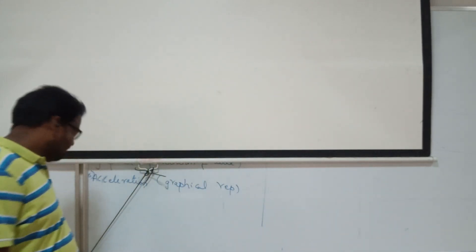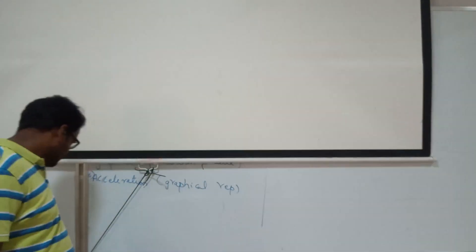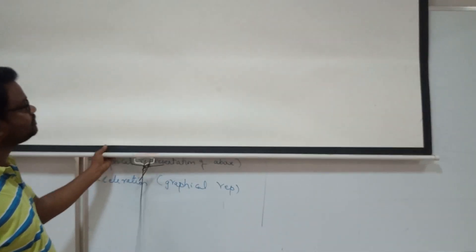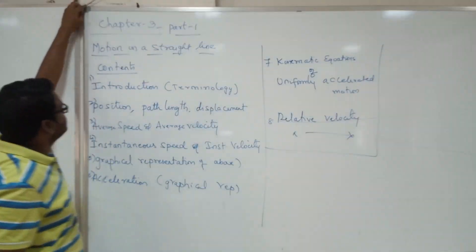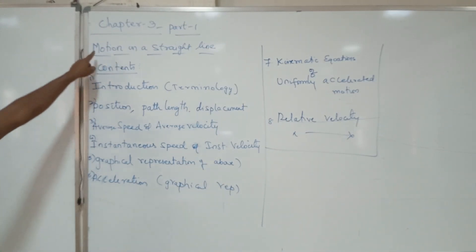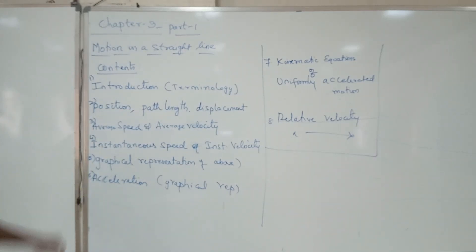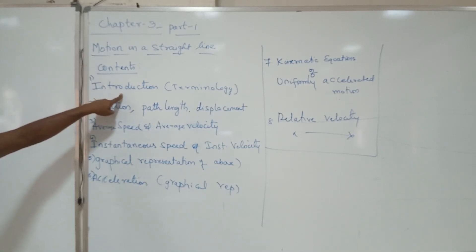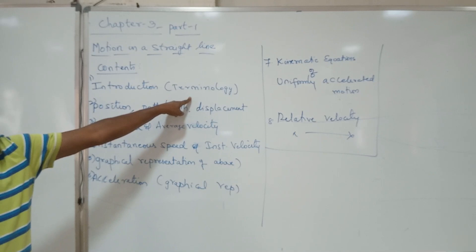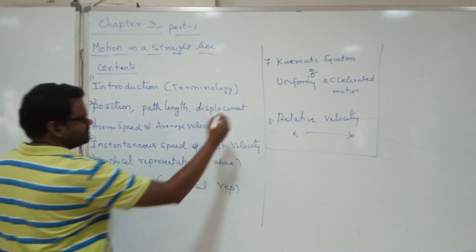First of all, I would like to go over the contents of this chapter. Once I give a brief introduction to the contents, we will then analyze what you are going to learn. The chapter is named 'Motion in a Straight Line' and the contents include: an introduction to the terminologies used, and knowledge on position, path length, displacement, and related terms.